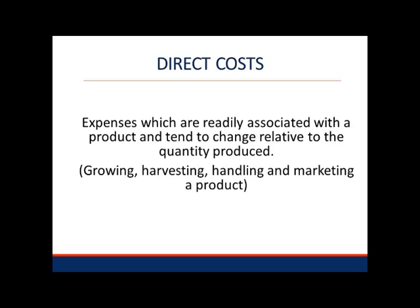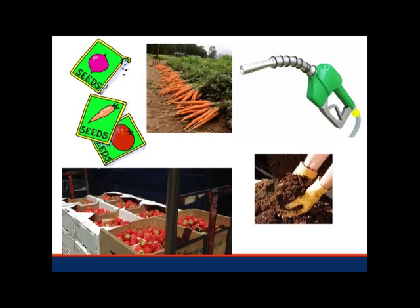This process starts with identifying which costs are actually direct costs on a farm. Direct costs are those expenses which are readily associated with the product and tend to change relative to the quantity produced. Crop direct costs are primarily the variable costs of growing, harvesting, handling, and marketing a product.